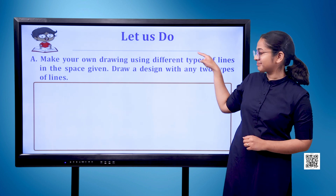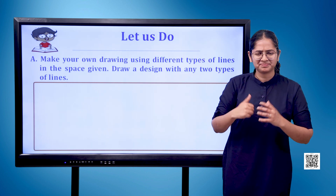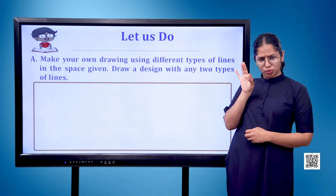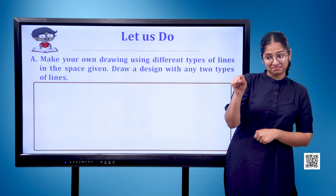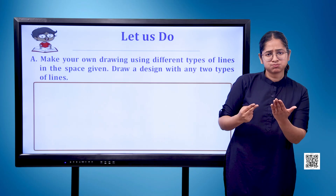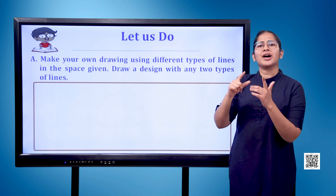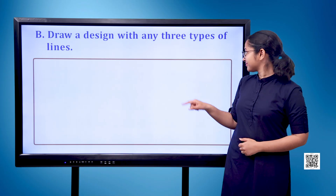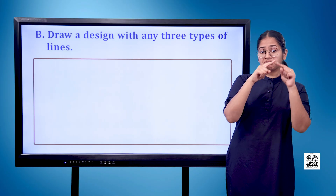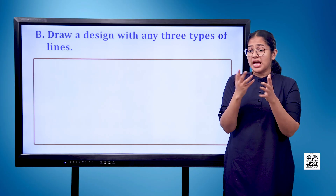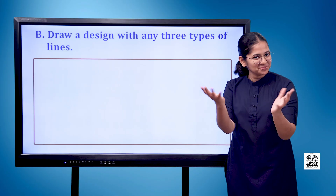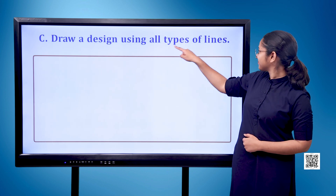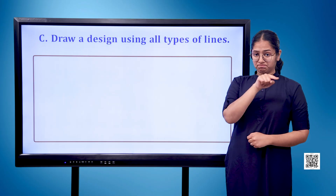Let us do: A. Make your own drawing using different types of lines in the given space — draw a design with any two types of lines. B. In the space given here, draw a design with any three types of lines. C. Draw a design using all types of lines in the given space.